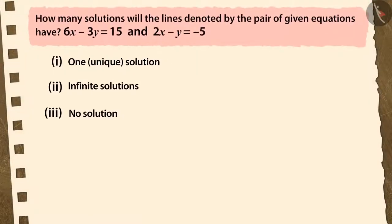How many solutions will the lines denoted by the pair of equations 6x minus 3y is equal to 15 and 2x minus y is equal to minus 5 have? Pause the video and try to solve this question.